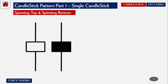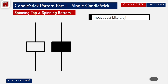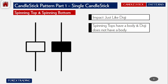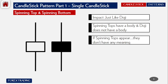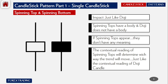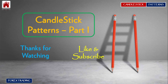Finally, we have the Spinning Top and Spinning Bottom. They have a white body and a black body, called bullish and bearish respectively. They are just like a doji — the only difference is that spinning tops have a body while a doji does not. When spinning tops appear, they don't indicate a specific direction on their own — it's a neutral scenario. The contextual reading of spinning tops will determine which way the trend moves, just like the contextual reading of a doji candle.